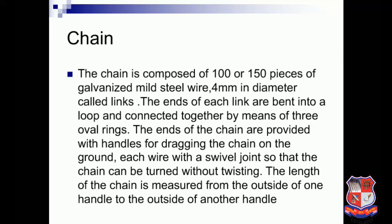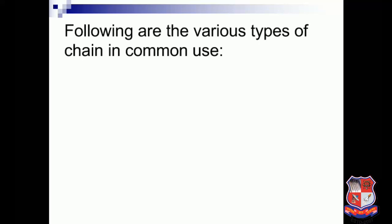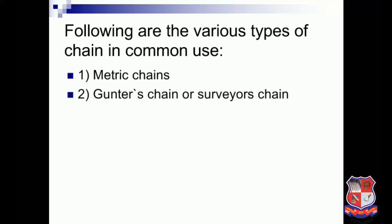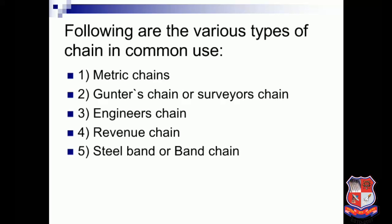A chain is composed of 100 or 150 pieces of galvanized mild steel wire, 4 mm in diameter, called links. The ends of each link are bent into a loop and connected together by means of three oval rings. The ends of the chain are provided with handles for dragging the chain on the ground, each with swivel joints so the chain can be turned without twisting. The length is measured from the outside of one handle to the outside of another. The common types of chain are: metric chain, Gunter's chain (surveyor's chain), engineer's chain, revenue chain, and steel band or band chain.